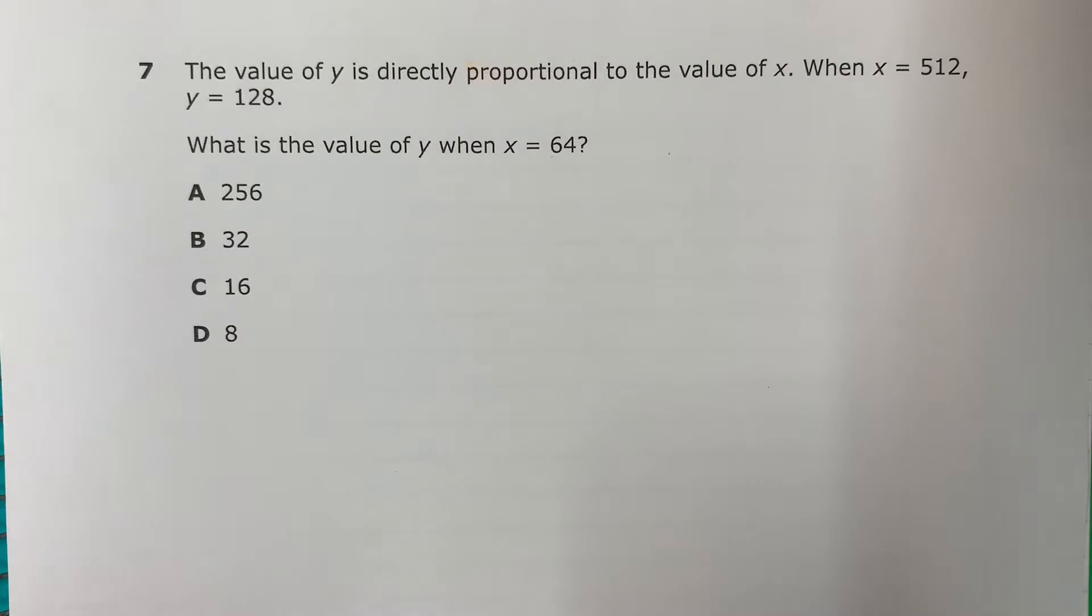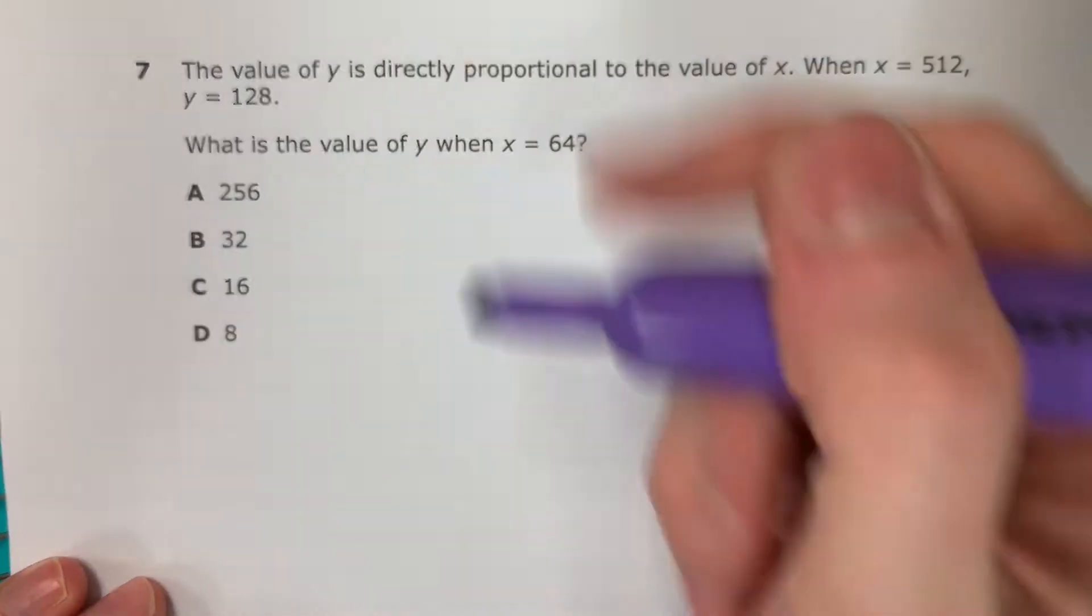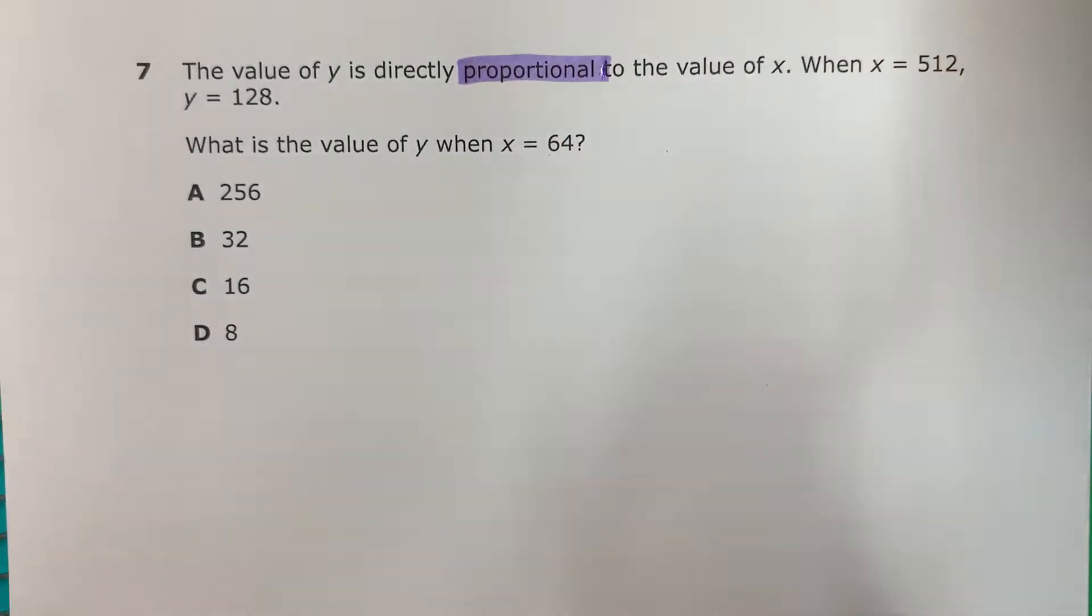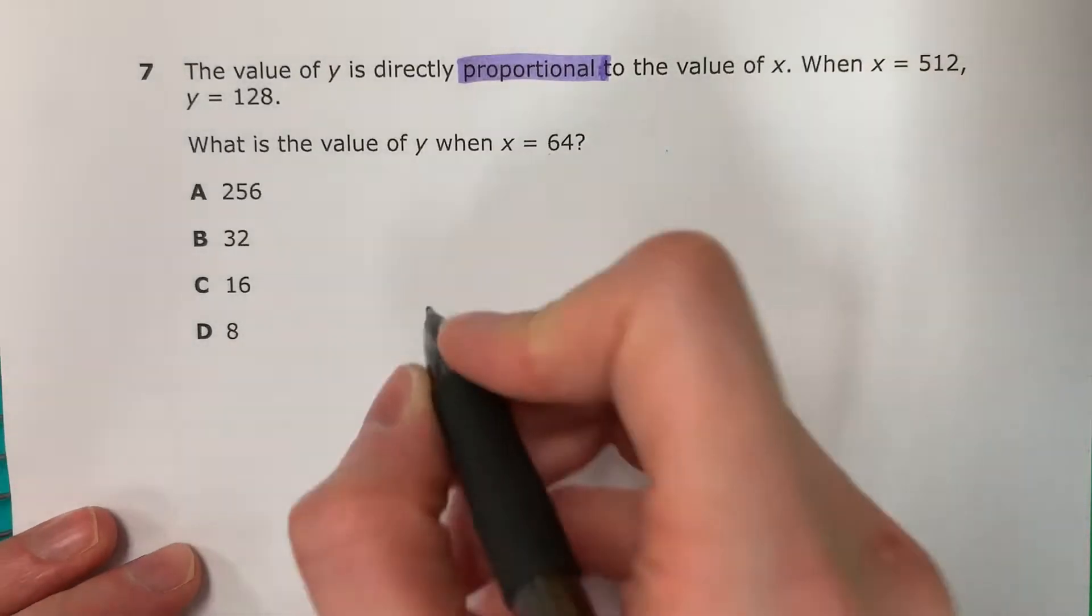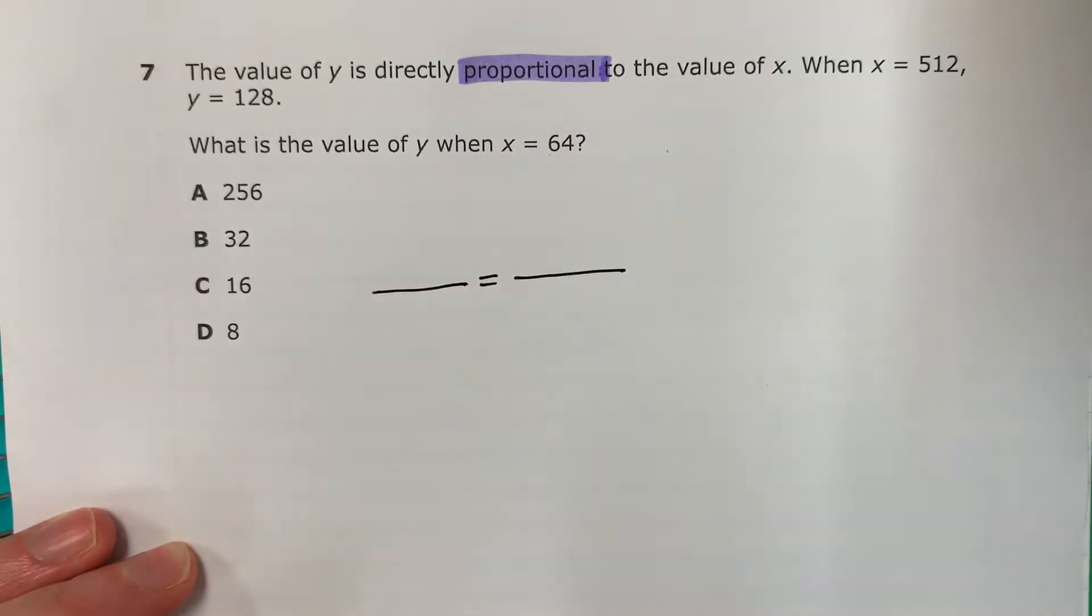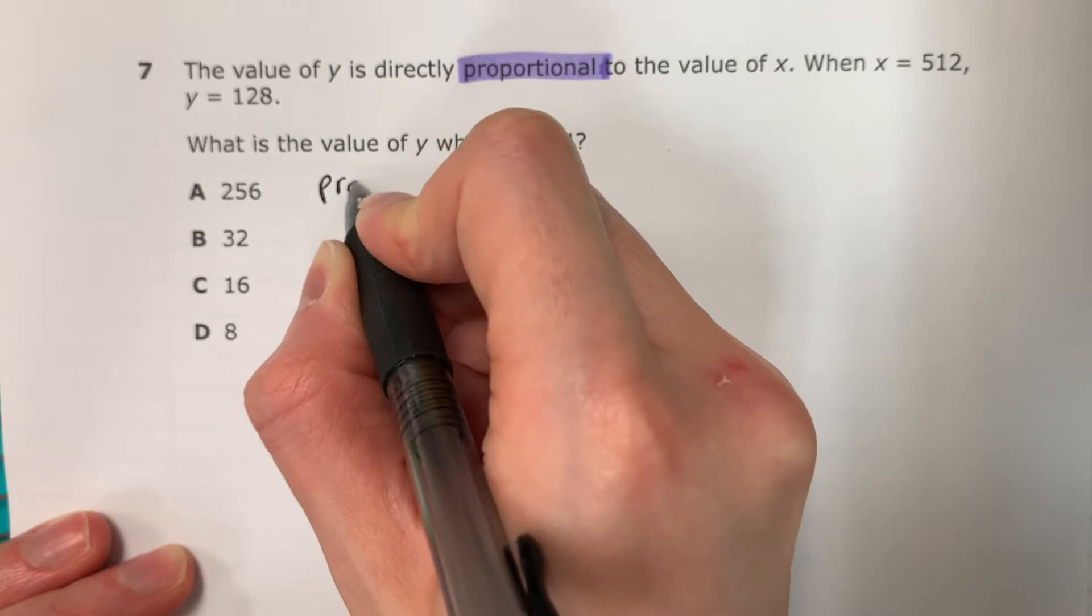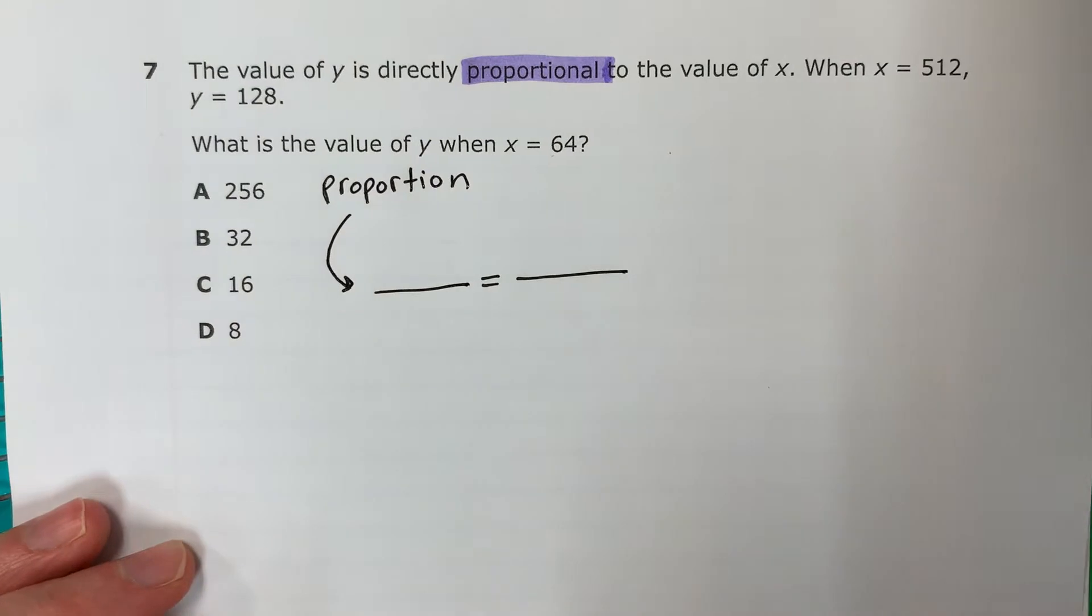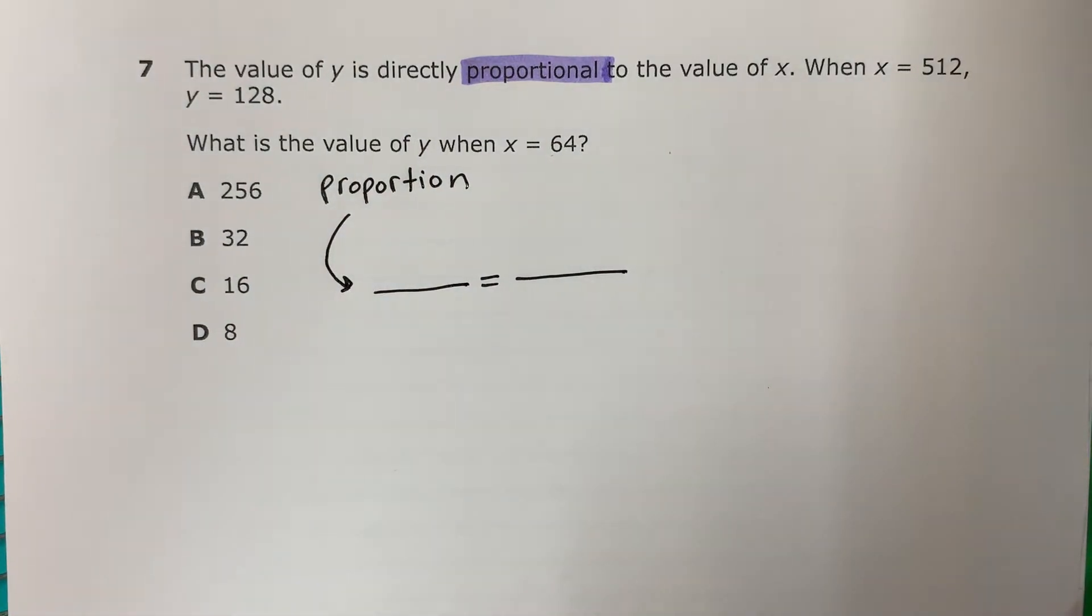Okay, so what is important here? ¿Qué es importante aquí? Proportional. This word, esta palabra, proportional. If you have this word, si tiene esta palabra, you are automatically, automaticamente, you are doing this. So if you have proportion, you are going to do this automatic, automaticamente.